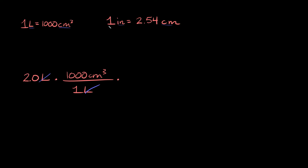First we need to convert this relationship into a volumetric relationship, because right now it just says 1 inch equals 2.54 centimeters — those are just lengths, not volumes. We're talking about three-dimensional volumes, so we need to raise both sides to the third power. If we were talking about areas — square footage, square inches, square centimeters — we'd use a power of 2, but since we're dealing with volumes, we raise everything to the third power.